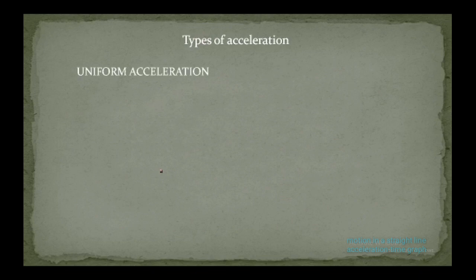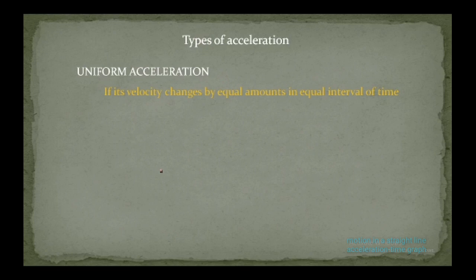The first type is uniform acceleration. The acceleration of an object is said to be uniform if its velocity changes by equal amounts in equal intervals of time. This is called uniform acceleration.